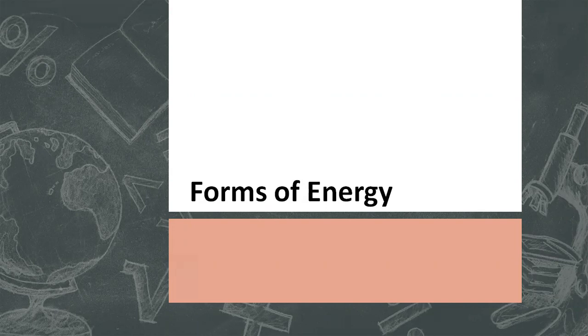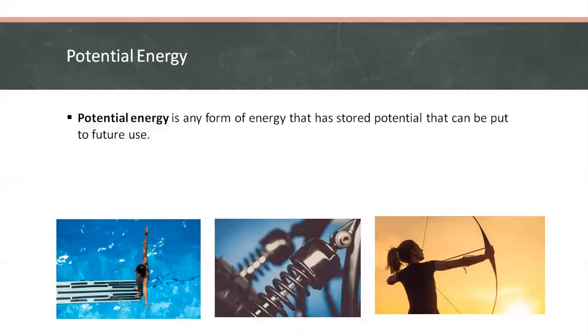The first category is potential energy, which is stored energy that can be put to use in the future. An example of this is compressing or stretching an object such as a rubber band or pulling back a bow's arrow or a spring. It stores potential energy, which we call elastic potential energy.